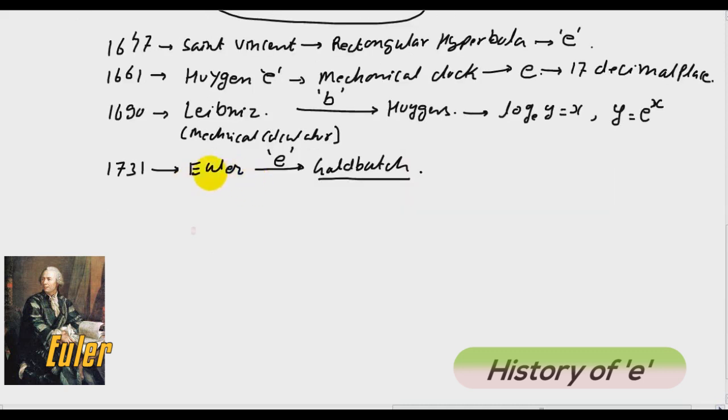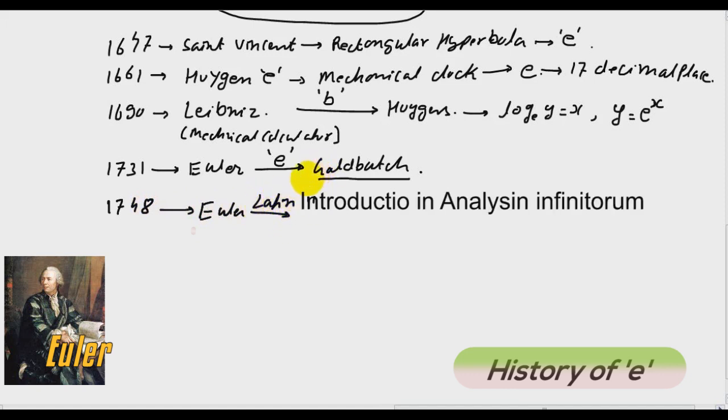Hence in year 1748, Euler published a book, a Latin book, in which he gave e is equal to 1 plus 1 over 1 factorial plus 1 over 2 factorial plus 1 over 3 factorial plus 1 over 4 factorial and so on. He also gave a pattern of e.